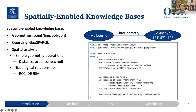This example is trying to find a restaurant in Melbourne. When we use a GeoSPARQL query over a spatially enabled knowledge base, we can perform spatial analyses such as simple geometric operations like distance, area, and convex hull, or topological relationships such as containment or cross.